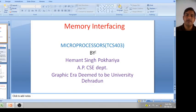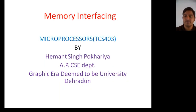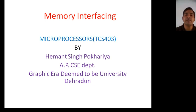Hello everyone, today I will discuss memory interfacing. What is memory interfacing and what is the use of this memory interfacing? A microprocessor needs to access data and code which are stored in memory quite frequently. This access is done by memory interfacing, and there are two types of memory: RAM and ROM.